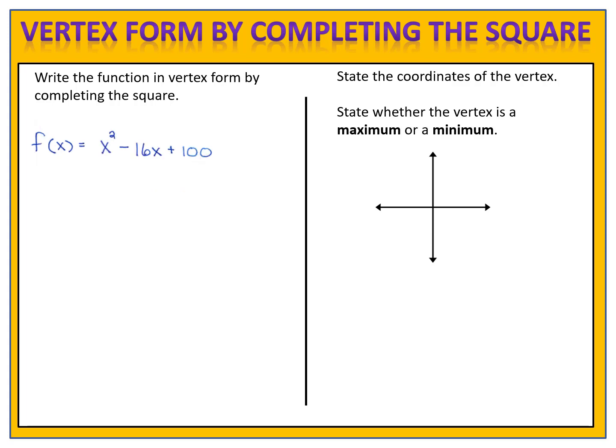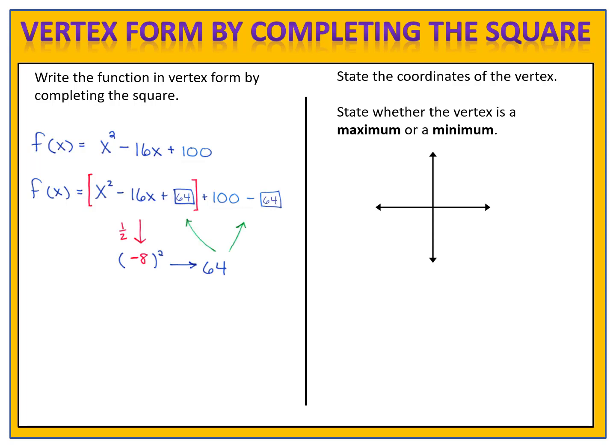Let's end today with one last example: write the function in vertex form by completing the square. f of x equals x squared minus 16x plus 100. Rewrite with the mystery boxes — f of x equals x squared minus 16x plus the mystery box, plus 100 minus the mystery box — and put the red brackets around the trinomial. Take half of negative 16, which is negative 8, and square it to get 64. The number in both boxes is 64.